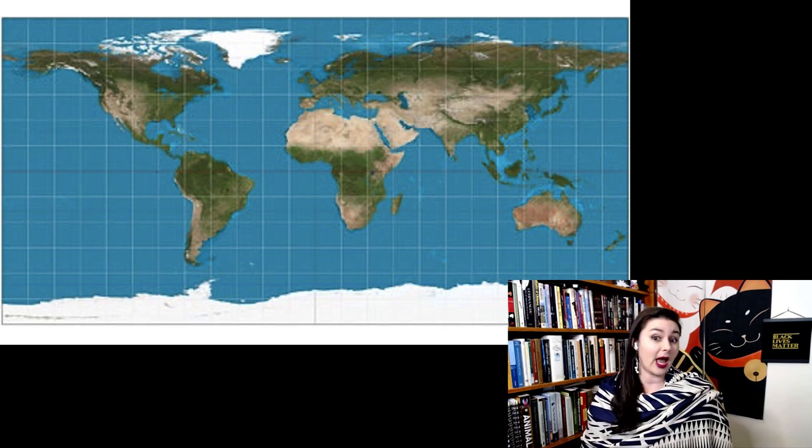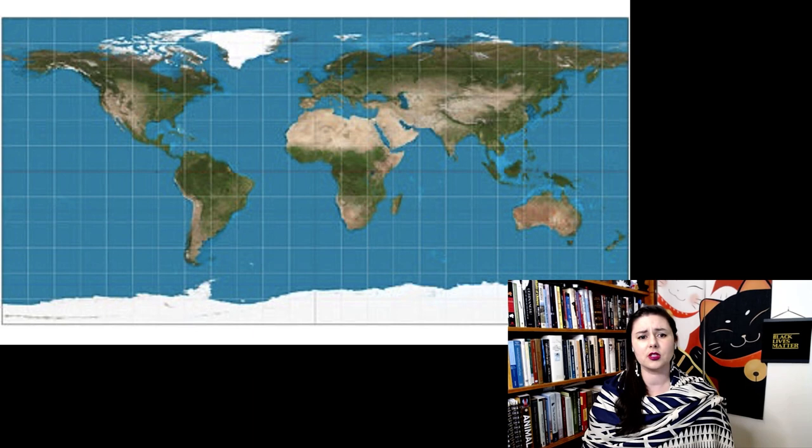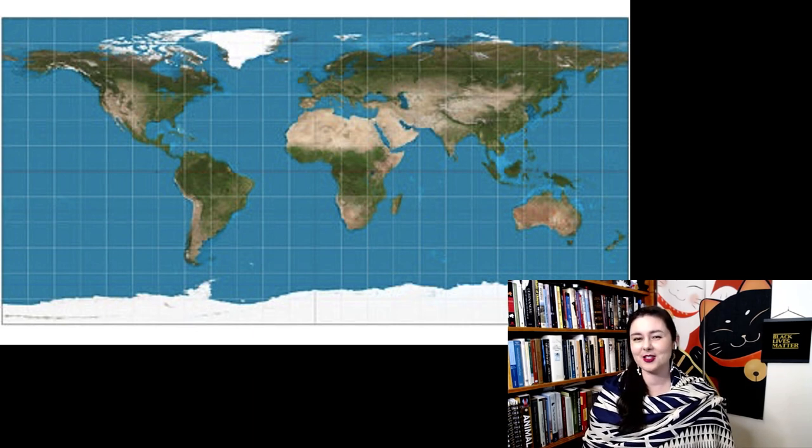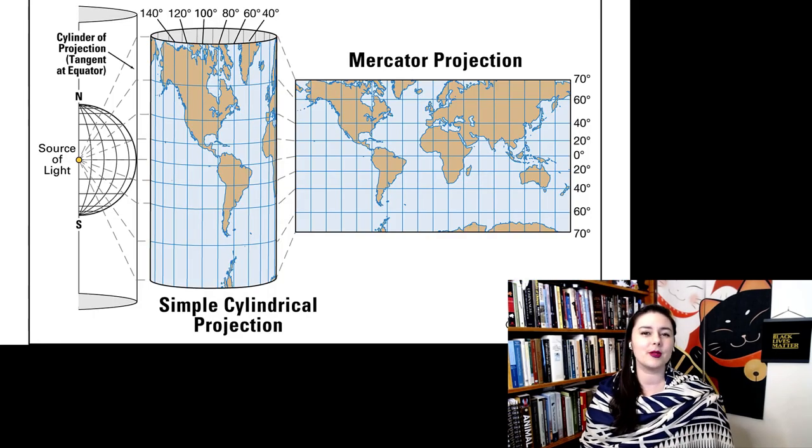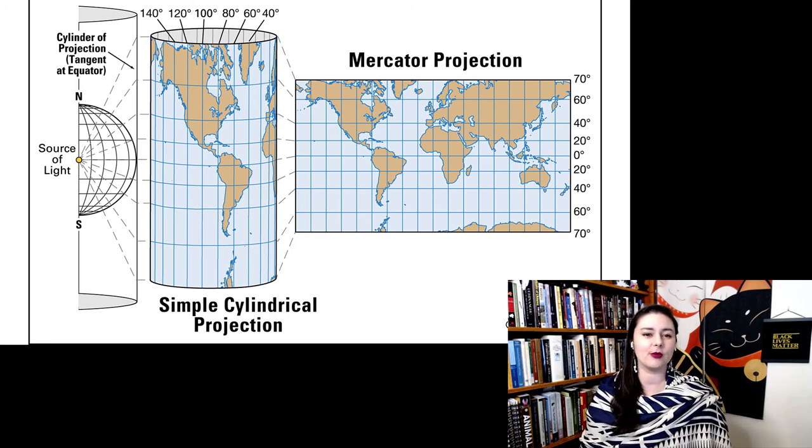Looking at this map here, Africa is pretty big. But Eurasia also looks big. The Americas also look big. But this is a consequence of the type of map we're using. So the most common map that you'll run across is called a Mercator projection. And you can see how we make it here.